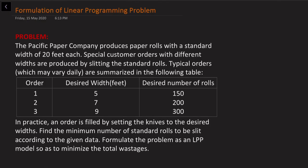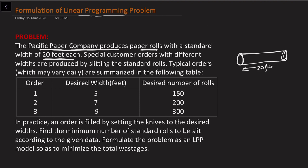In this video I'll be covering some more examples on formulation of linear programming problems. This problem talks about the Pacific Paper Company, which produces paper rolls with a standard width of 20 feet each. Special customer orders with different widths are produced by slitting the standard roll. Typical orders, which may vary daily, are summarized in the following table, where we have orders 1, 2, and 3 with desirable widths given in feet.